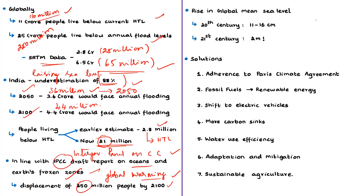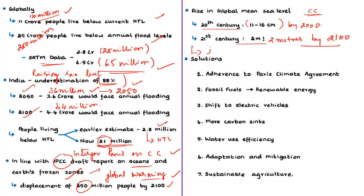Due to climate change, the global mean sea level could rise by about 11 to 16 centimeters in the 20th century and is expected to rise as much as about 2 meters by the end of this century. This indicates the potential of rising sea levels to inundate low-lying areas and displace people living there, reshaping coastal areas, cities, economies and the entire globe — and some reports suggest this might happen by the end of this century.